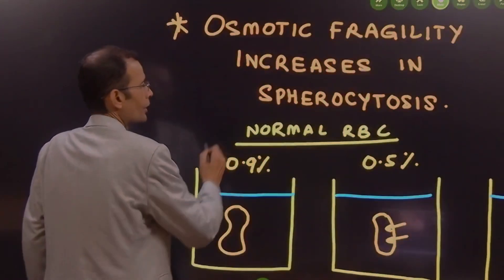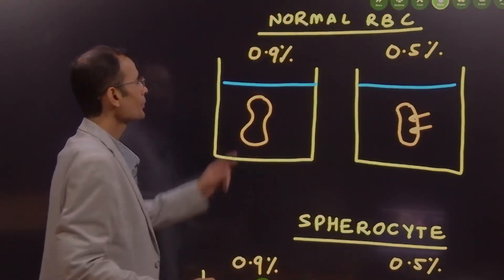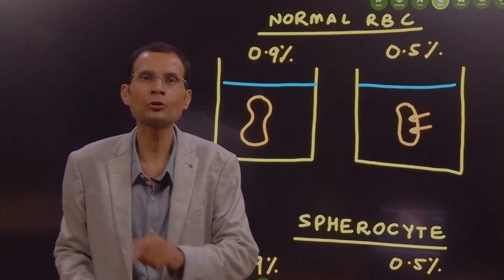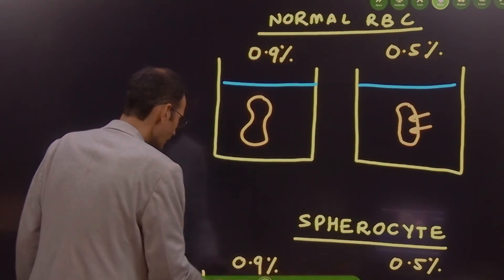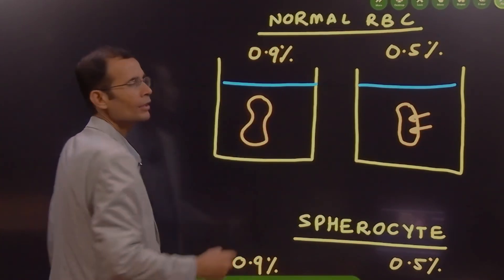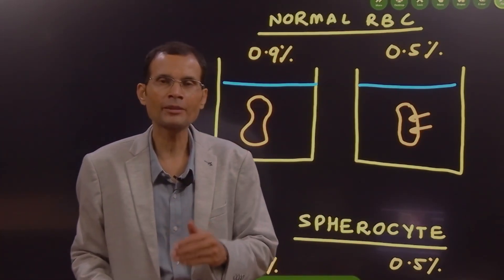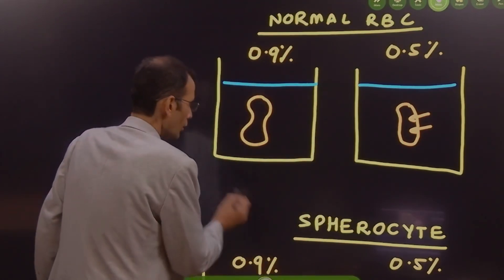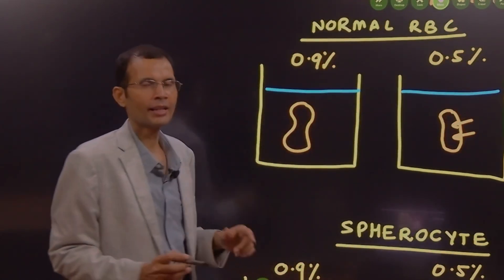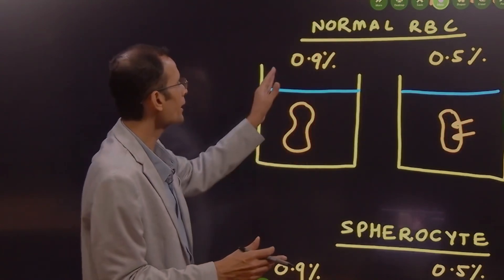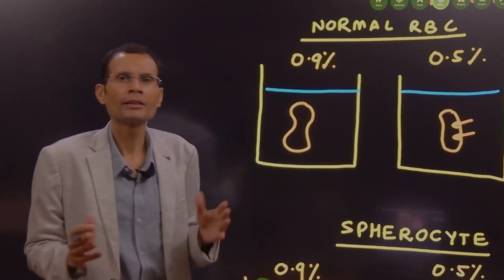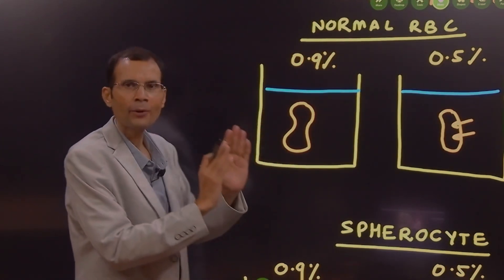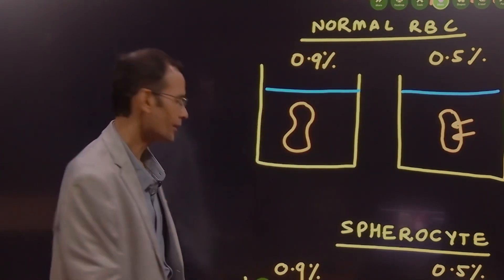Now look, for a normal RBC, 0.9% sodium chloride is said to be the isotonic solution, because inside the RBC the sodium chloride is present at a concentration of 0.9%. So if you place an RBC in this isotonic solution, there will be no movement of water by osmosis and the RBC will remain as it is.